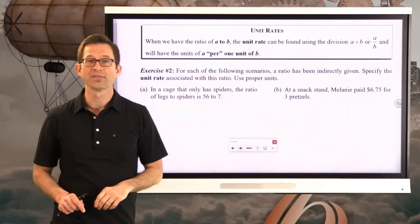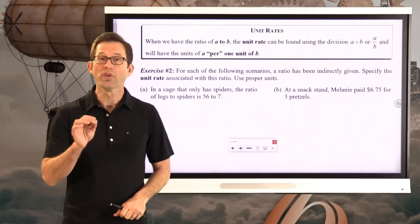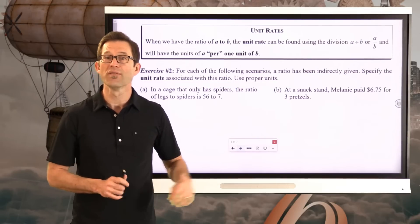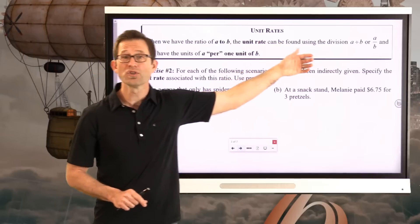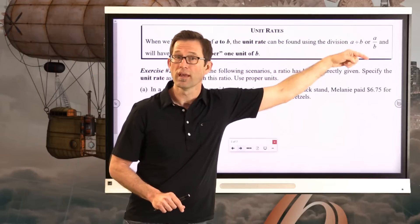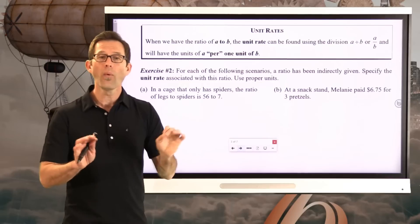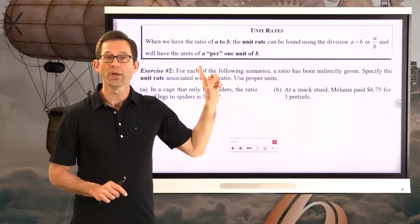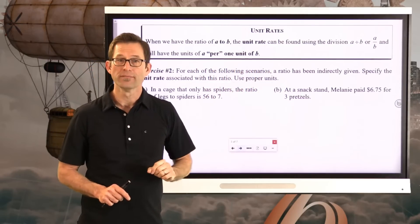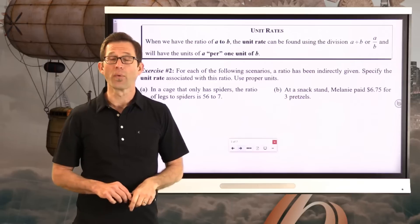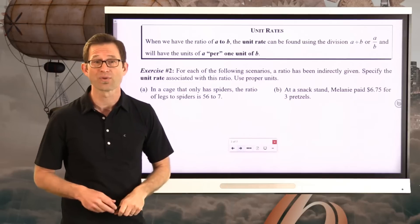Unit rates: when we have the ratio of A to B, the unit rate can be found by using the division A divided by B — which is just the fraction A over B — and it will always have units of A-units per one unit of B. Let's play around with unit rates, which you've actually worked with a lot in the past even in this course.